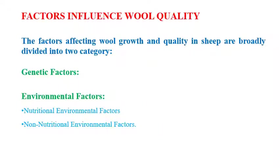Now moving to the second part: factors influencing wool quality. The factors affecting wool growth and quality in sheep are broadly divided into two categories: genetic factors, which relate to germplasm and control over wool growth and physiological mechanisms; and environmental factors, which include nutritional environmental factors and non-nutritional environmental factors.